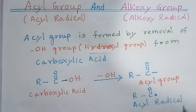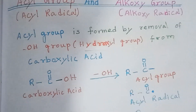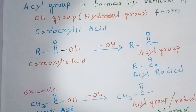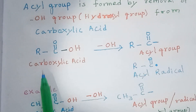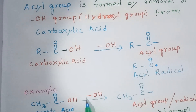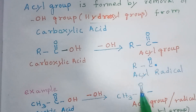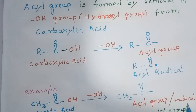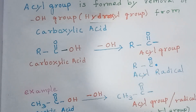Let's see an example. Acetic acid is CH3-C double bond O-OH. If we remove the OH group from acetic acid, it becomes CH3-C double bond O with one free valence. This is the acyl group or acyl radical, and since it comes from acetic acid, we can also call it the acetyl group.